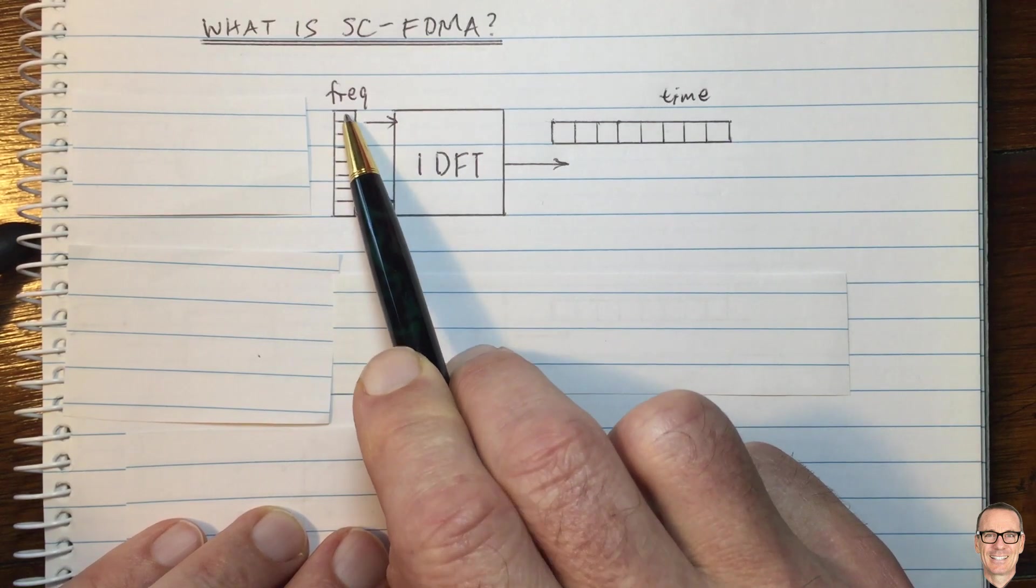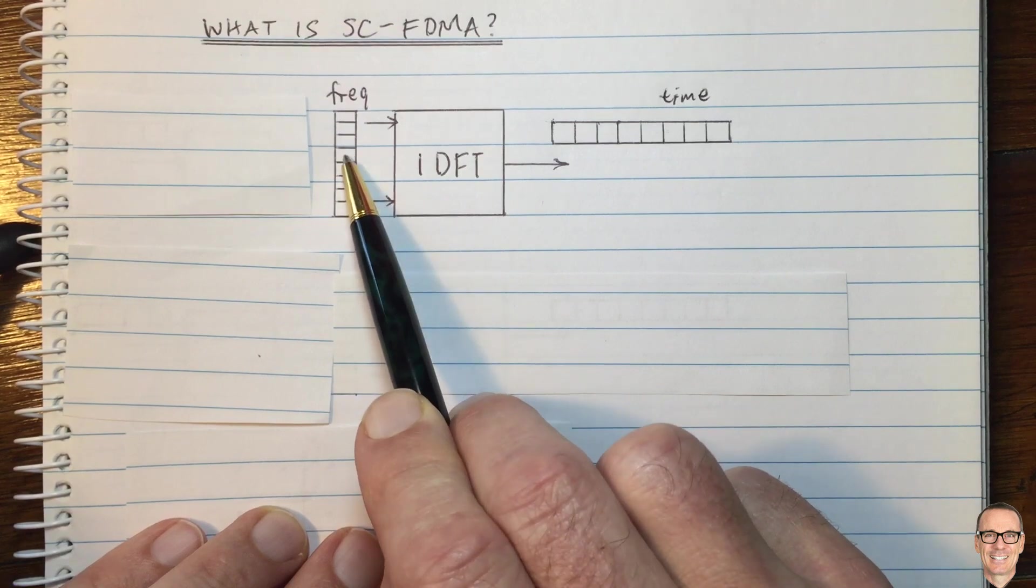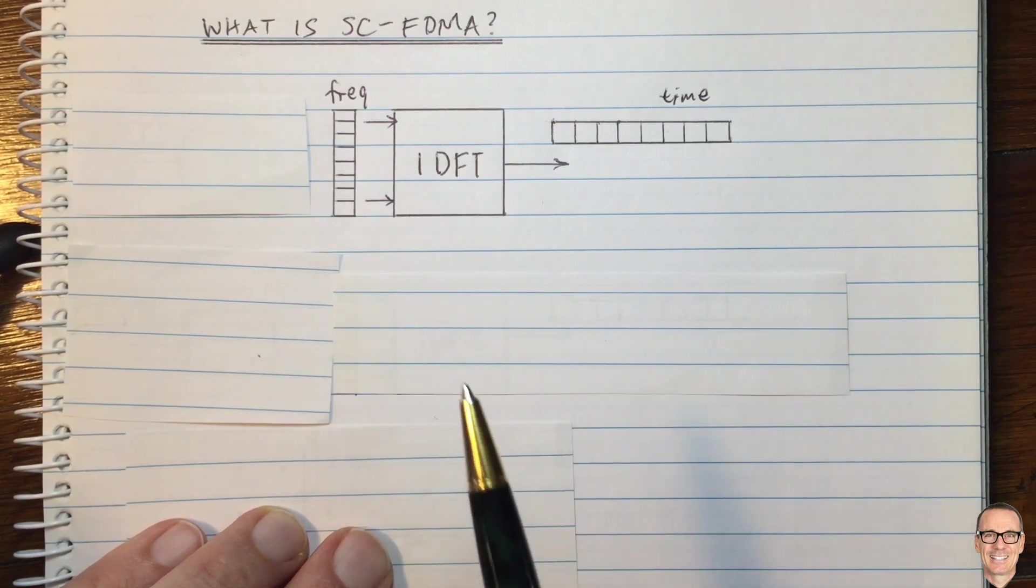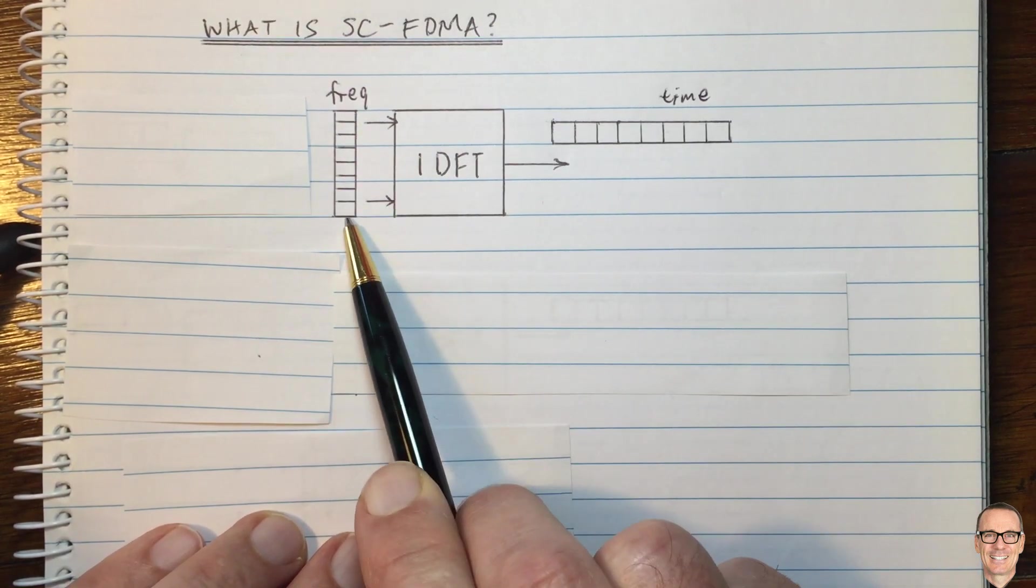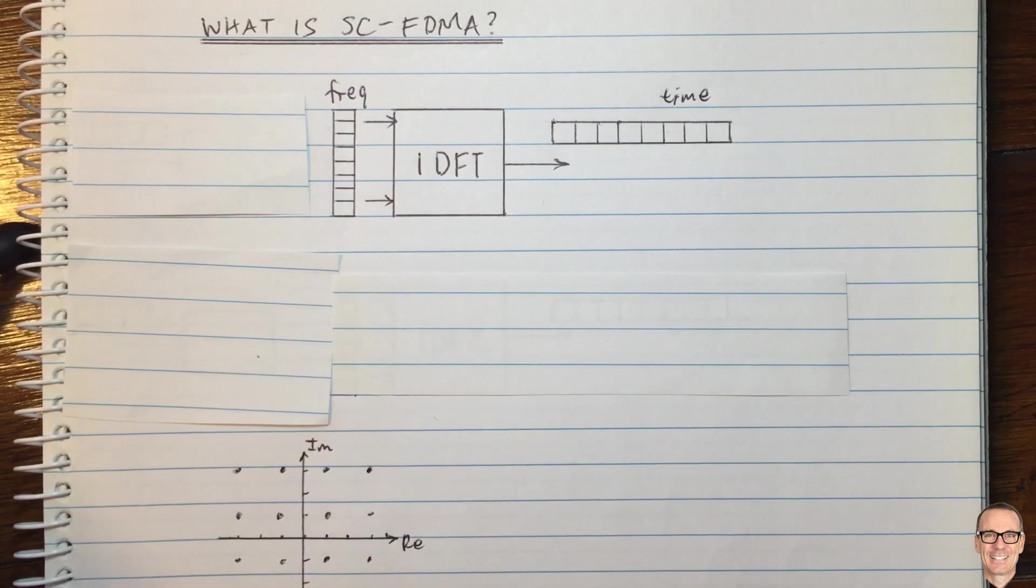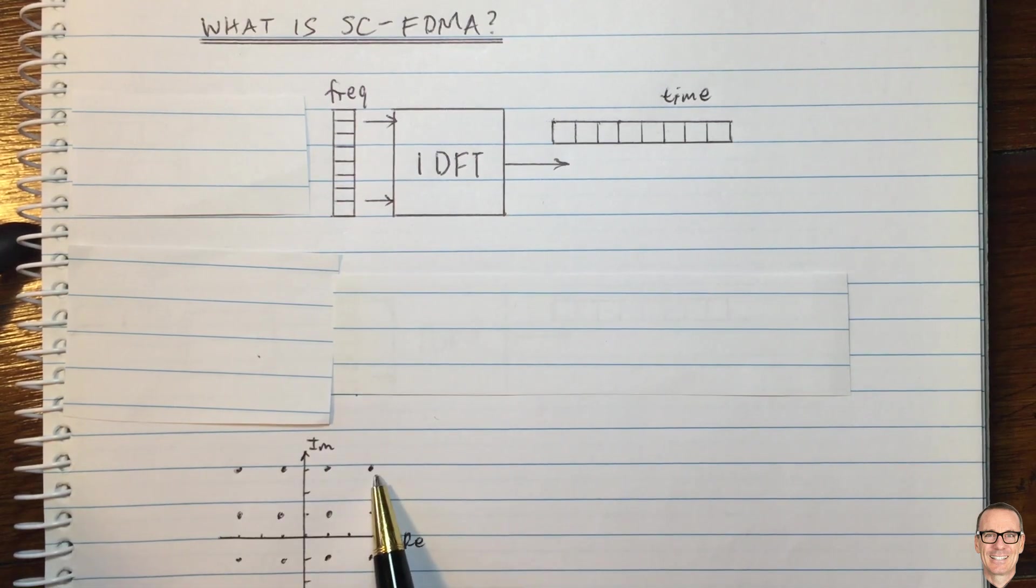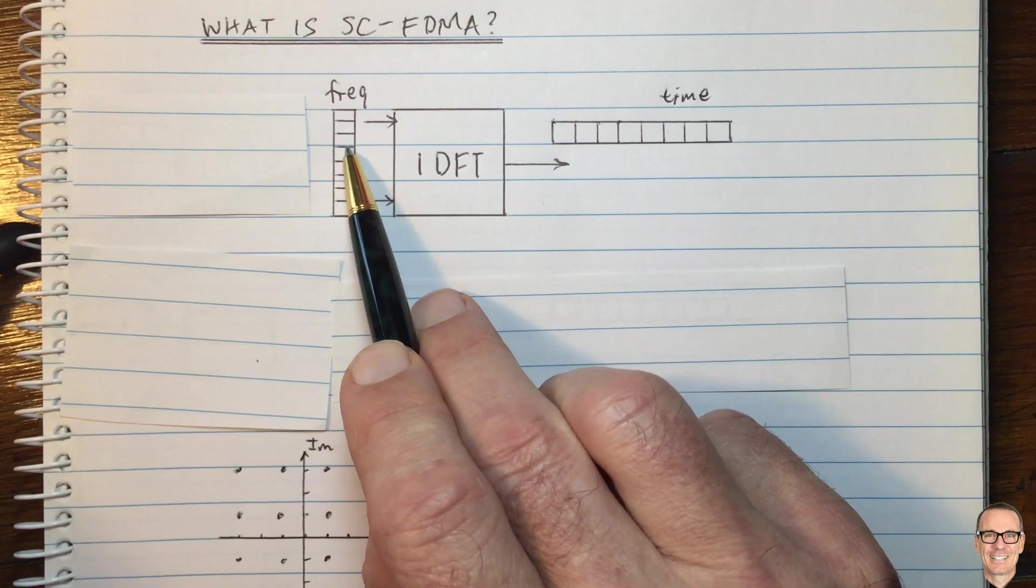So it means that you are using parallel subchannels, different frequencies. And you're putting a different constellation point, different complex number representing your data, into each of these subchannels.